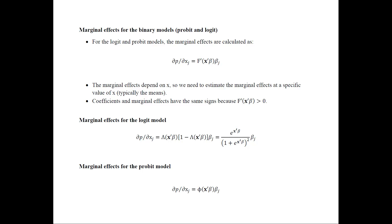The marginal effects for the logit model are obtained by taking the derivative of the logit expression, yielding a formula that depends on x and also includes beta j. For the probit model, the marginal effect is the PDF of the standard normal distribution multiplied by beta j. The most important things to remember are that marginal effects depend on x and they have the same signs as beta j.